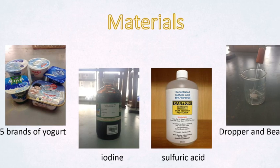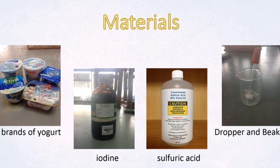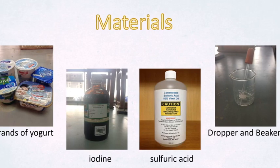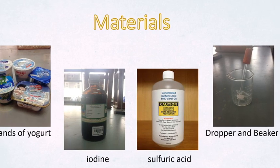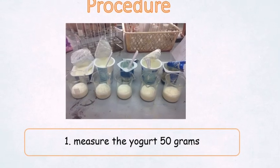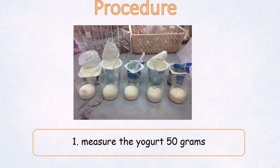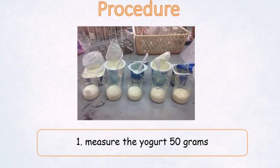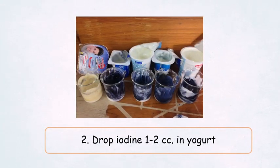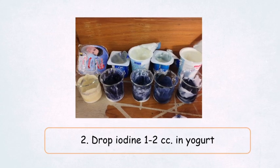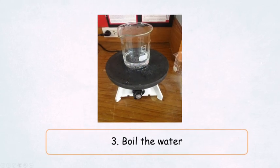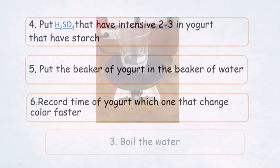Materials: Five brands of yogurt, iodine, sulfuric acid, dropper, and beaker. Procedure: First, measure the yogurt 50 grams. Second, drop iodine 1 or 2 cc in yogurt. Third, boil the water.